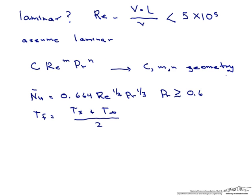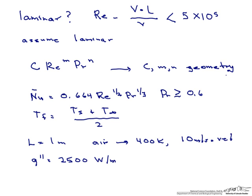Let's take a look at how to use this. Let's say we have an isothermal flat plate. The length of the plate is 1 meter long. Our fluid is air. It's at 400 K. It has a velocity of 10 meters per second. And an average heat flux of 2500 watts per meter squared. And what we're interested in is what is the surface temperature of this plate.